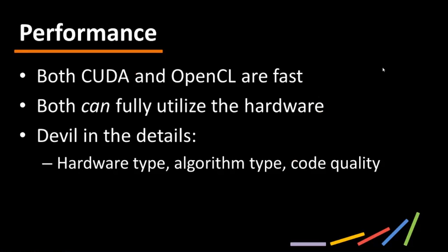The first feature is performance. Both CUDA and OpenCL are fast, and on GPU devices they are much faster than the CPU for data parallel codes, with 10x speedups commonly seen. Both can fully utilize the hardware — but we italicize the word 'can' because the devil is really in the details. Performance depends on variables including hardware type, algorithm type, and code quality.